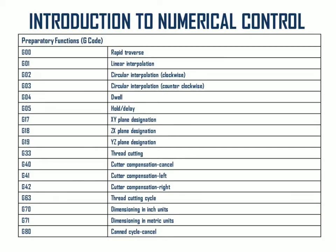The first preparatory function in this table is G00, that is rapid traverse. Then G01 is linear interpolation, G02 circular interpolation clockwise, G03 circular interpolation counter-clockwise, G04 dwell, G05 hold and delay, G17 XY plane designation, G18 ZX plane designation, G19 YZ plane designation, and G33 thread cutting.